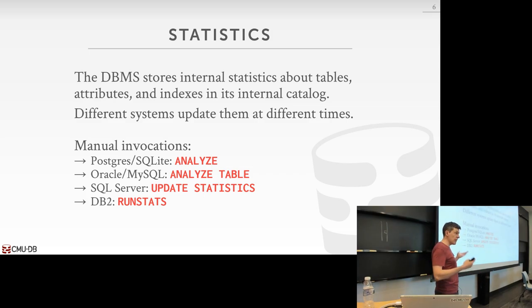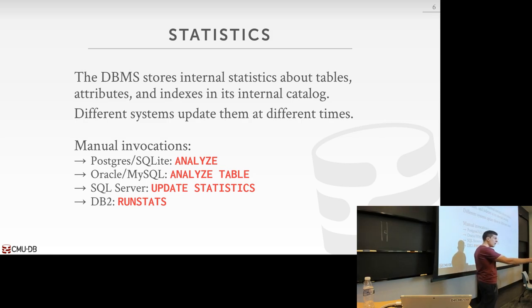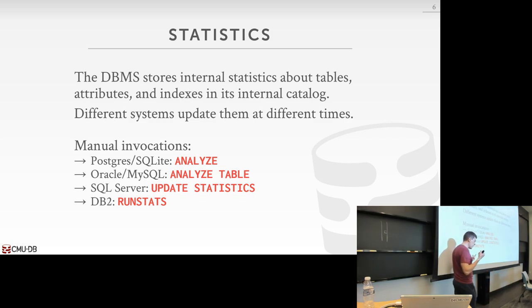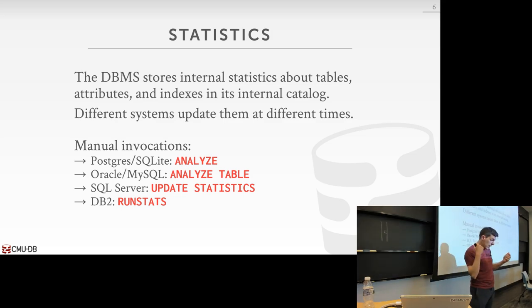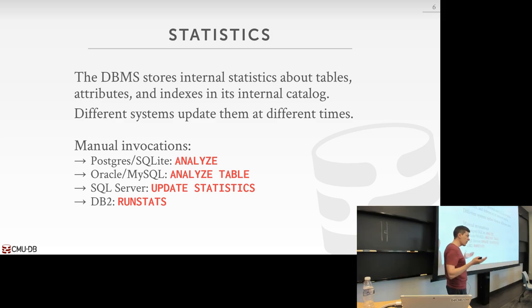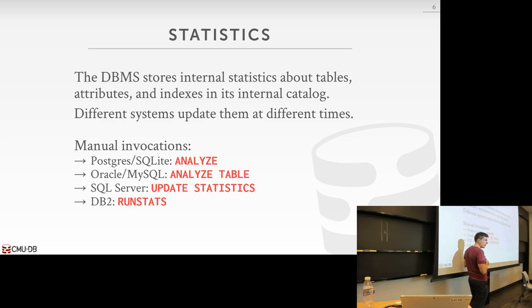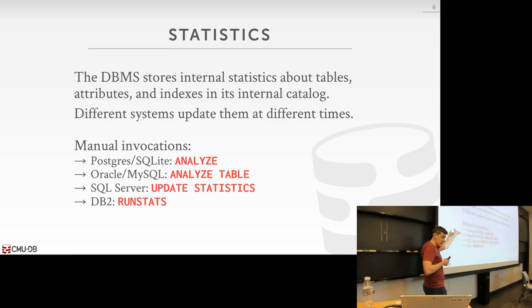How you collect statistics can vary by implementation. All major systems have a way to force the database to collect new statistics — Analyze, Analyze Table, Update Stats, Run Stats — which triggers a sequential scan on the table to update statistics. Some systems run this in cron jobs periodically, some piggyback off queries as they run, and others have triggers when 10–20% of the table has changed. A common setup in an OLTP system is to disable this during the day and then run it at nighttime, because a sequential scan on the entire table is expensive.